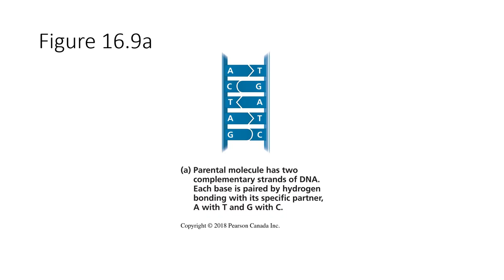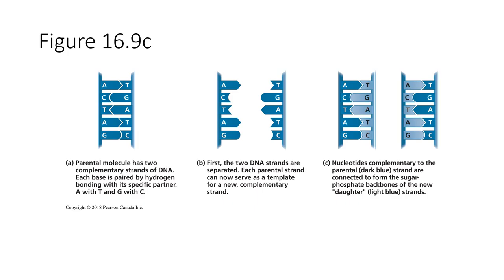Just reminding you about complementary base pairing: here are the parental molecules with two complementary strands of DNA. For replication to occur they are separated, and then daughter strands are created that are complementary to the original parental strands. They are created in what's called a semi-conservative manner, so that the daughter cells have a parental strand in dark blue and a newly synthesized strand in light blue.